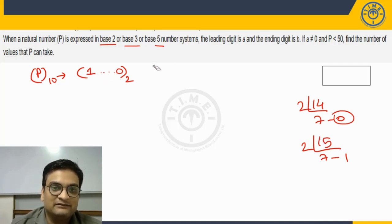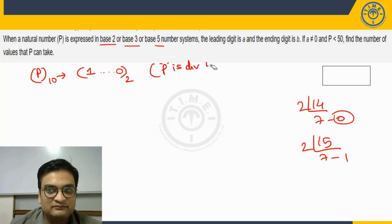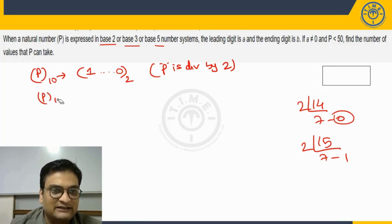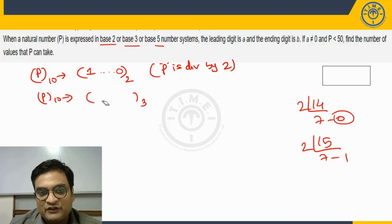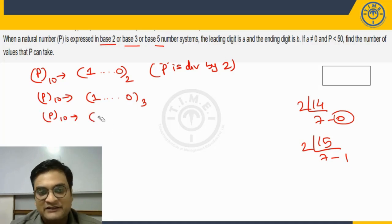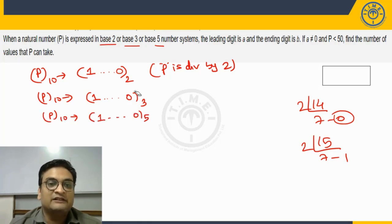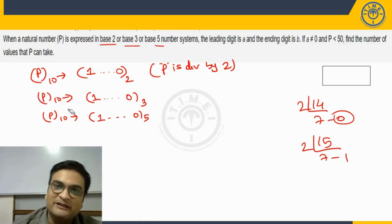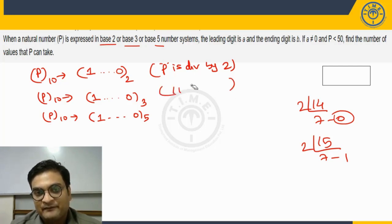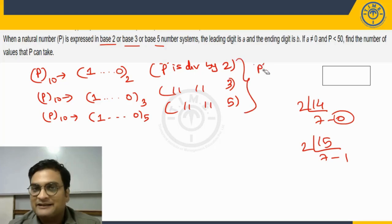I will take both cases. Case 1: P is divisible by 2. The last digit is 0. That means even when I convert P into base 3, it should start with 1 and end with 0. Similarly, it should start with 1 in case of 5 also, and end with 0. If it is ending with 0 even in case of 3, the number P should be divisible by 3 also. Similarly, if it is ending with 0 in case of base 5, number P should be divisible by 5 also. That means effectively, P is divisible by 2, P is divisible by 3, P is divisible by 5. Overall, P should be divisible by their LCM also. What is the LCM of 2, 3 and 5? It is 30.